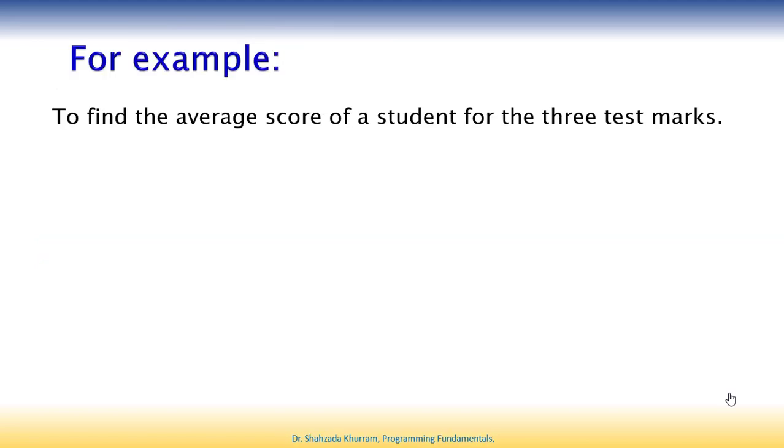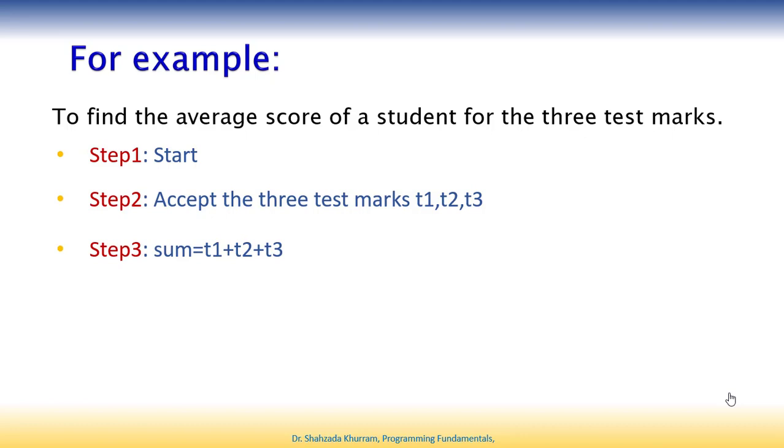Let's see an example. We need to find the average score of a student for three test marks. How do we write this? Step 1: Start. Step 2: Accept the three test marks - T1, T2, T3. Step 3: Calculate the sum - T1 plus T2 plus T3. Step 4: Take the average - the formula is the total sum divided by three. Step 5: Display the average value. Step 6: Stop.